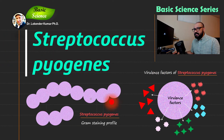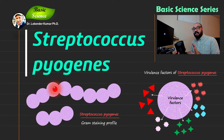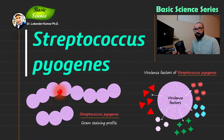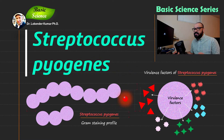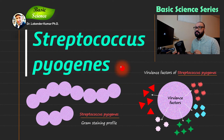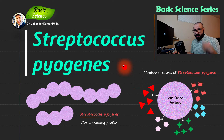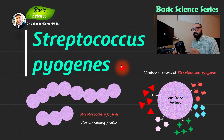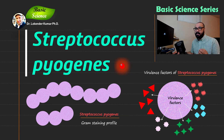Streptococcus pyogenes is gram-positive and present in chains. When you have any sample containing Streptococcus pyogenes and do gram staining, you will see bacteria present in chains. In this presentation, I will discuss important virulence factors associated with this organism, which is responsible for upper respiratory tract infections. I will explain virulence factors, gram staining profiling, media profiling, and diagnostic tests used for identification.